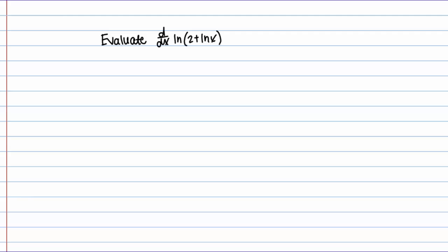First let's restate the relevant formulas we're going to need. We know that the derivative of the natural log of X equals 1 over X. And an extension of that is the derivative of the natural log of some function U of X equals U prime of X over U of X. This second formula is just an extension of the first one with an application of the chain rule.